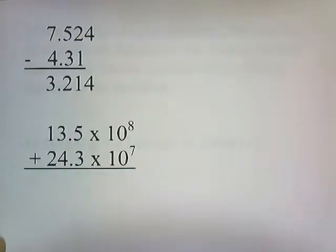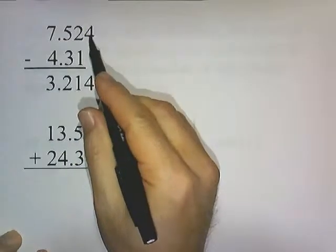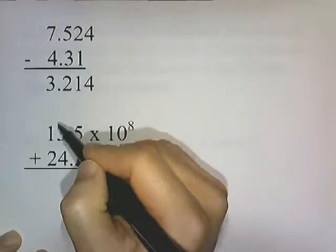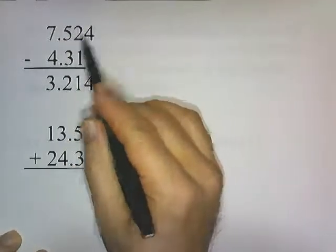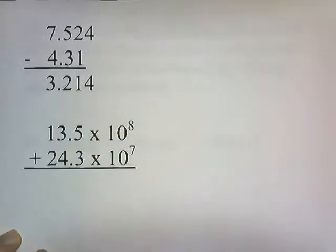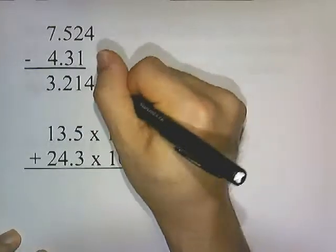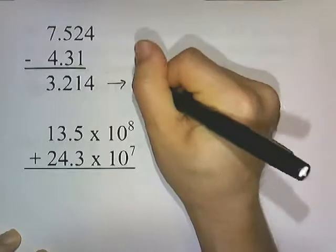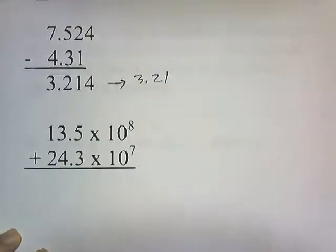For subtraction: 7.524 minus 4.31 gives a raw answer. The first number has three decimal places, the second has two. Our final answer can only have two decimal places, so this rounds to 3.21.